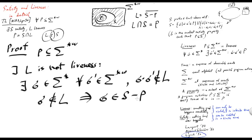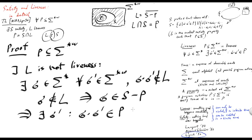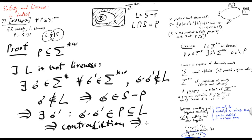By construction, the only finite elements of S minus P — elements of S which do not belong to P — are those that have extensions in P. It follows by construction that there exists sigma-prime such that sigma extended with sigma-prime is in P. But P is a subset of L, giving us a contradiction with the fact that no extension of sigma can appear in the property L. This implies that L is indeed a liveness property.